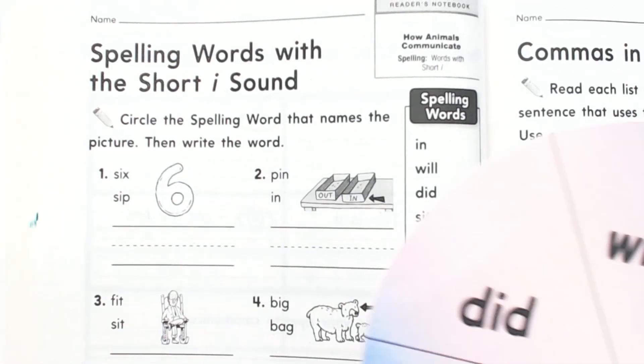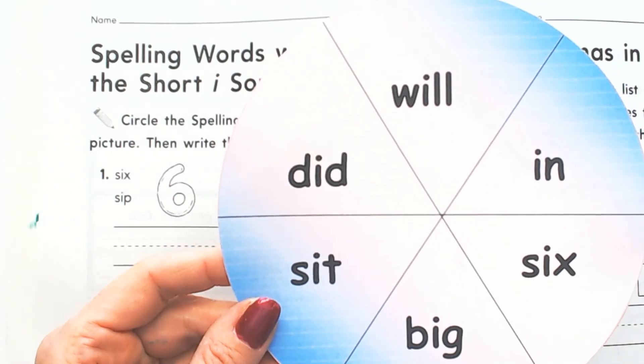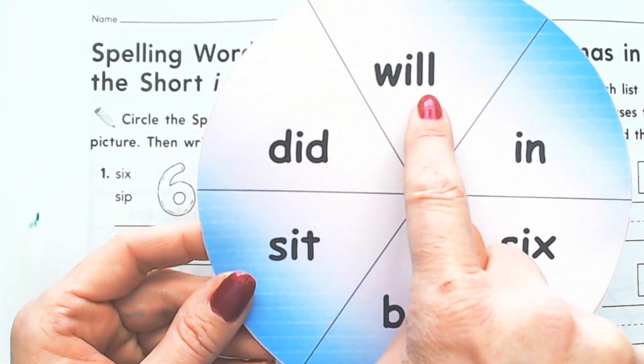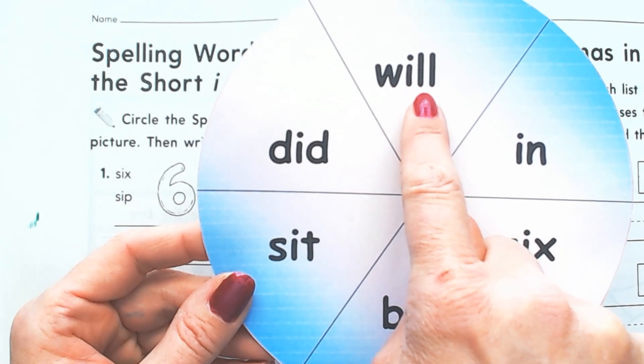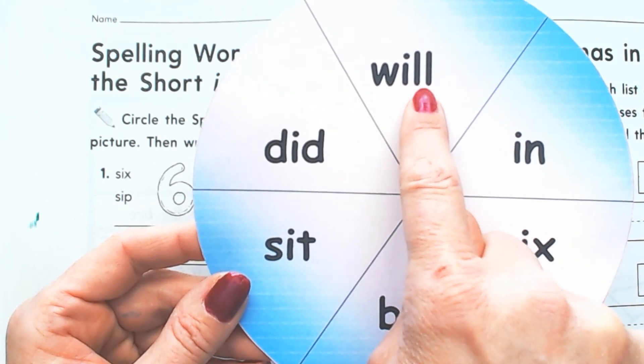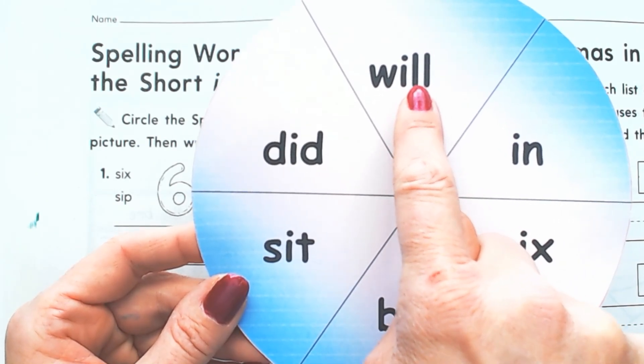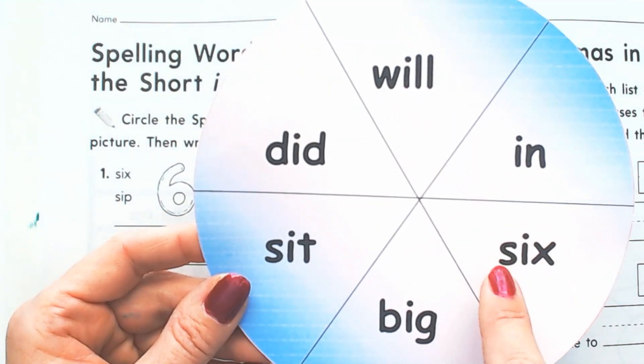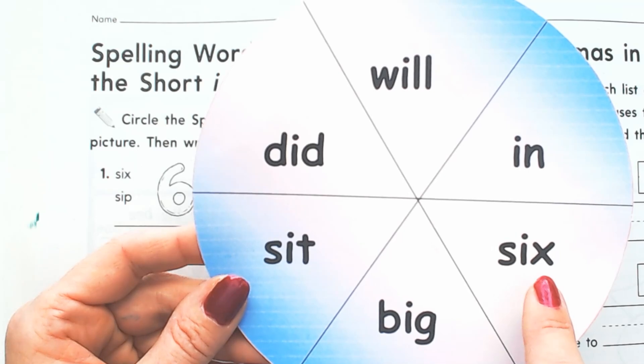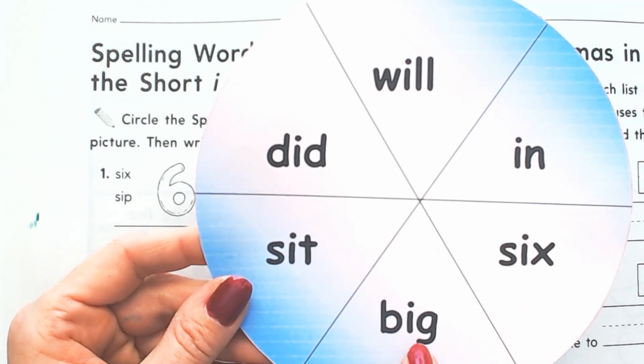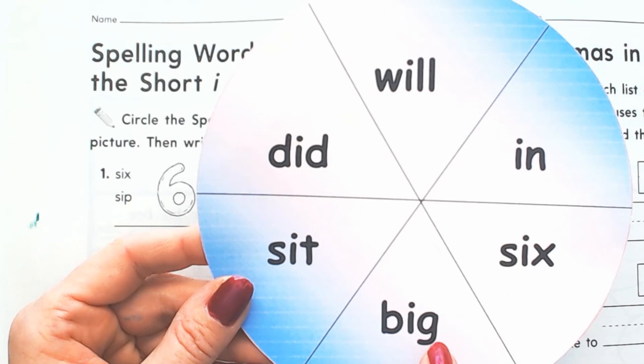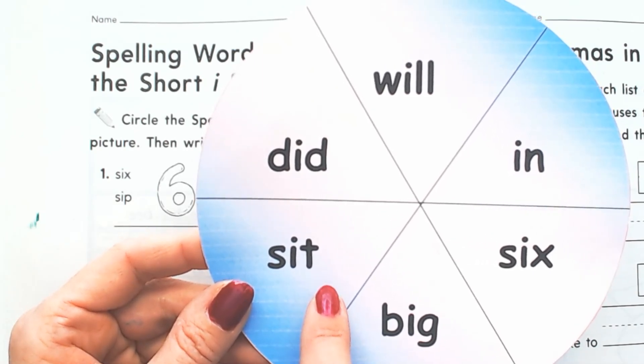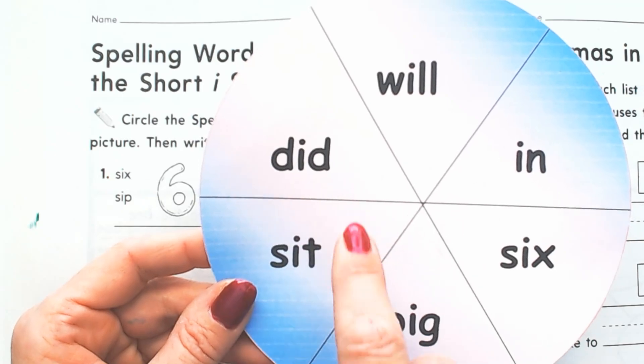We're going to practice the words. First of all, you'll be tested on these tomorrow. This one says 'will' and it's the trickiest one because it has two L's that make the sound and you have to remember. This one says 'in,' 'six,' 'big,' 'sit,' and 'did.'